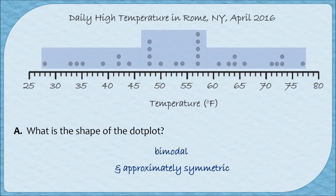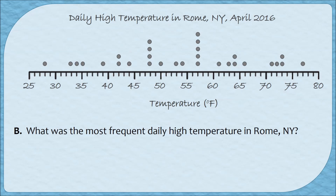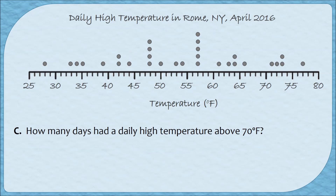Let's see what else we can learn from this graph. What was the most frequent daily high temperature in Rome, New York? We find the tallest column, which has five dots at 57 degrees — so 57 degrees was the most frequent daily high temperature. How many days had a daily high temperature above 70 degrees? We count the dots placed to the right of 70, and there are five dots, meaning five days had a daily high temperature greater than 70 degrees. Whenever you're answering questions, make sure you're labeling your values — whether it's degrees Fahrenheit, number of days, or any other unit.